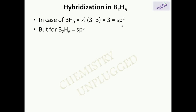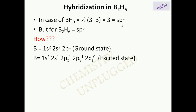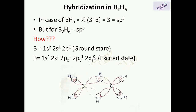In the case of B₂H₆, we have sp3 hybridization. In a boron atom, the electron configuration in the ground state is 1s² 2s² 2p¹. In the excited state it is 1s² 2s¹ 2px¹ 2py¹ 2pz⁰ — one electron from the 2s orbital is excited to 2p, and 2pz remains vacant. This gives four sp3 hybridized orbitals, one of which is vacant.